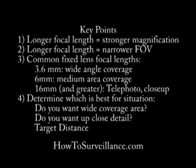Common fixed lenses come in 3.6 millimeter, 6 millimeter, and 16 millimeter. There are other lenses such as an 8 millimeter or 12 millimeter, but the 3.6, 6, and 16 tend to be very common on a lot of surveillance cameras. And finally, you need to determine which focal length lens is going to be best for your particular situation.